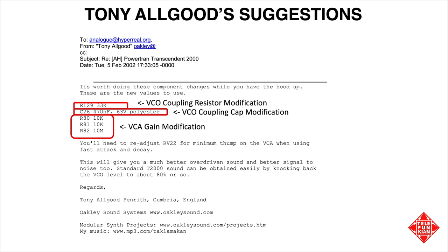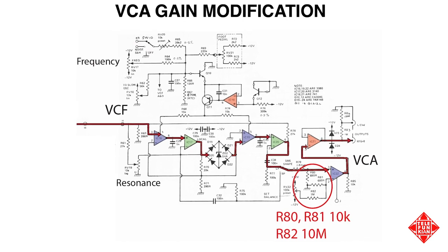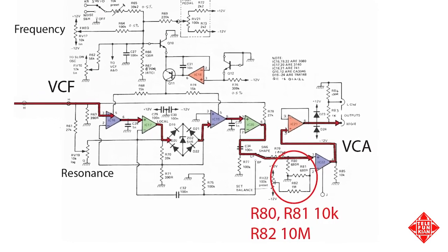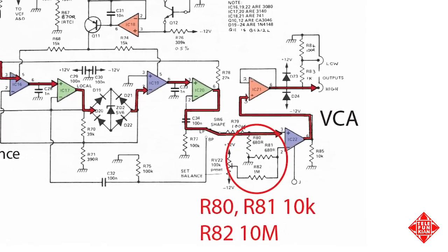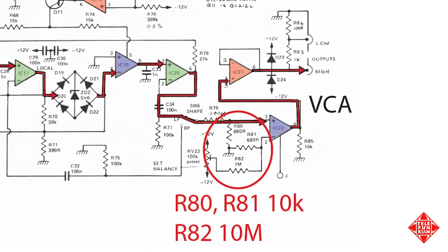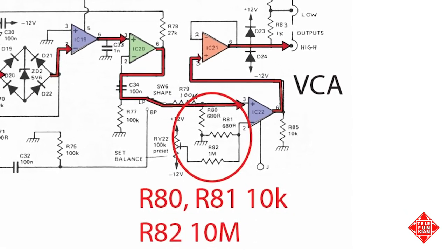If we examine Tony Allgood's suggestions for modifying the T2000, we see they can be broken down into three mods: a modification to the resistor that the synthesizer voice passes through between the VCO and the filter, a modification to a coupling capacitor in the VCO, and a modification to the resistors that establish the input voltage at the VCA. The last of these involves an increase to the resistor values attached to the inverting input on IC22, which is not a traditional op-amp but rather a 3080 operational transconductance amplifier. Tony confirmed that increasing these resistor values increases the differential voltage at the input of the OTA. R82 forms a simple voltage divider with R81. Since he increased R81 to 10k, it's necessary to increase R82 by a similar amount. To keep the same dividing ratio as before, R82 should be 15 meg.